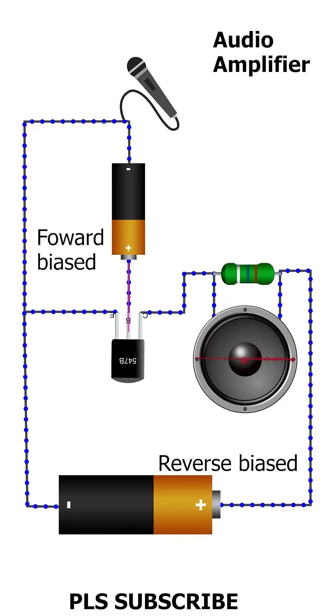A small input signal is applied to the base-emitter junction. This signal varies the voltage across the base-emitter junction, causing changes in the width of the depletion region.